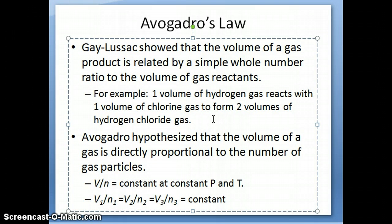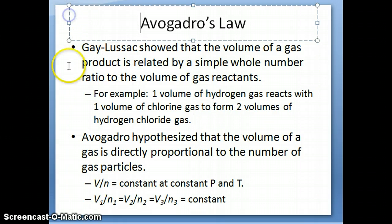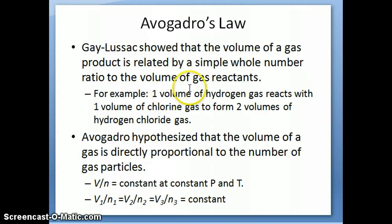The usefulness of this discovery later on was realized by Avogadro when he said that these volumes, the volume of a gas, is directly proportional to how many gas particles you have in that volume. So one volume of hydrogen gas corresponds to a specific number of particles of hydrogen gas, and the same way with one volume of chlorine gas, that corresponds to a certain number of particles of chlorine gas, and that allows you to form two volumes of hydrogen chloride, which also corresponds to a certain number of particles of hydrogen chloride.